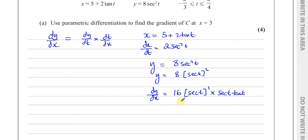If we simplify that a little bit, that's going to give us 16 times secant squared t times tan t. So that's dy dt, not dy dx. dy dt. We're so used to writing dy dx, we keep writing it. So that's dy dt, and that's dx dt.